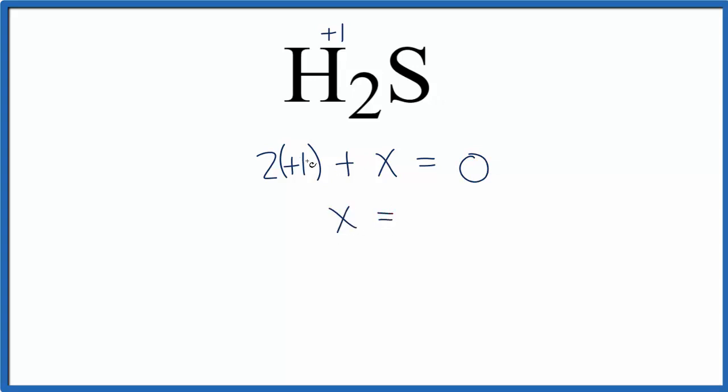X equals, we'll take and subtract two from each side, that'll cancel that out, x equals minus two, and like we said, the oxidation number on sulfur in H2S is minus two.